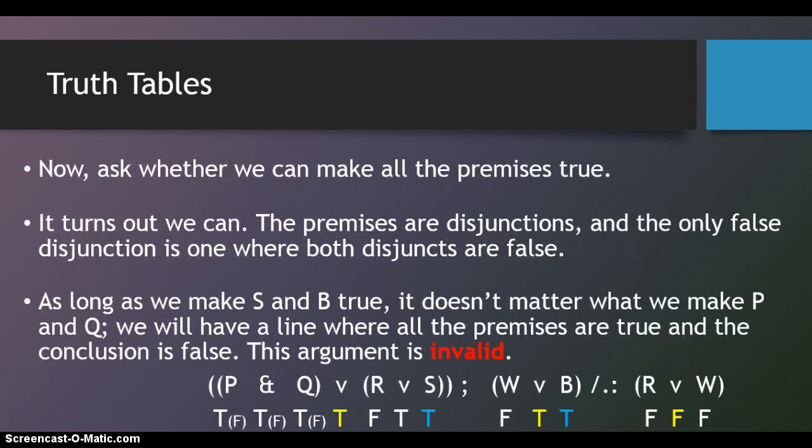Now we ask whether we can make all the premises true. And it turns out we can. The premises are disjunctions. And the only false disjunction is one where both disjuncts are false, just like we saw in our conclusion. So, as long as we make S and B true, it doesn't matter what we make P and Q. We will have a line where all the premises are true, and the conclusion is false. So, this argument, too, is invalid.